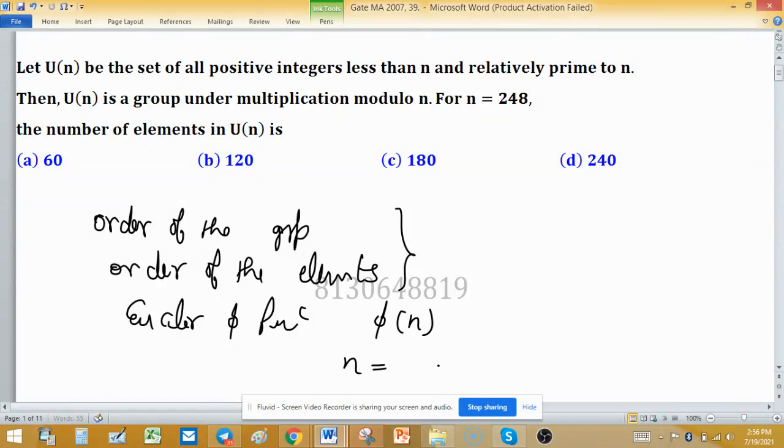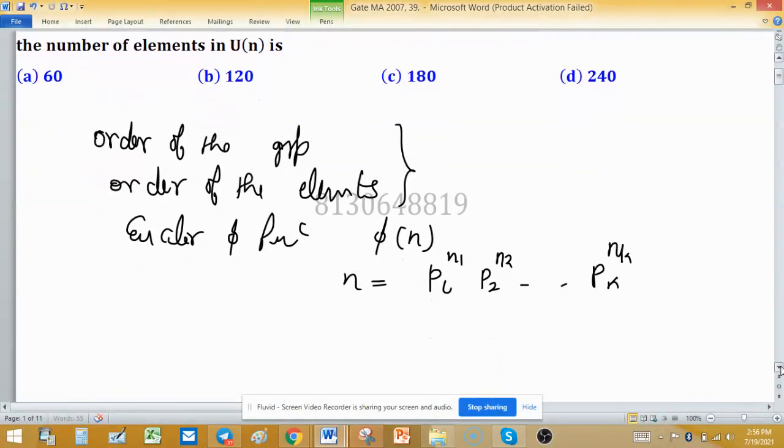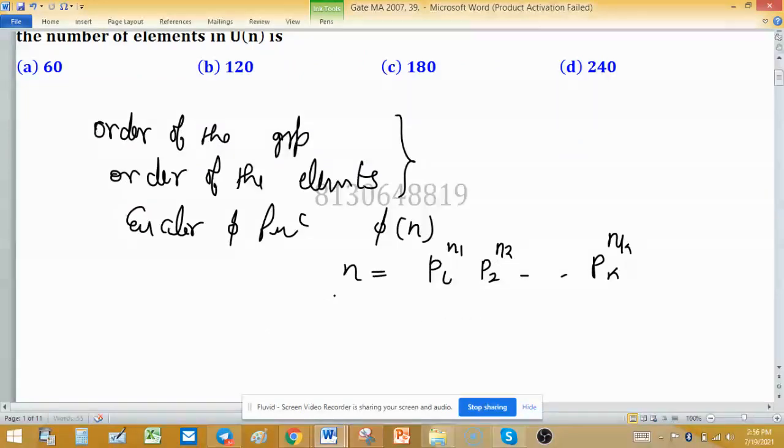Suppose this is φ(n), then how to find value of φ(n)? Write n as a prime factorization: suppose p₁ raised to the power n₁, p₂ raised to the power n₂, and so on, pₖ raised to the power nₖ. These are prime factorization of n, then φ(n)...